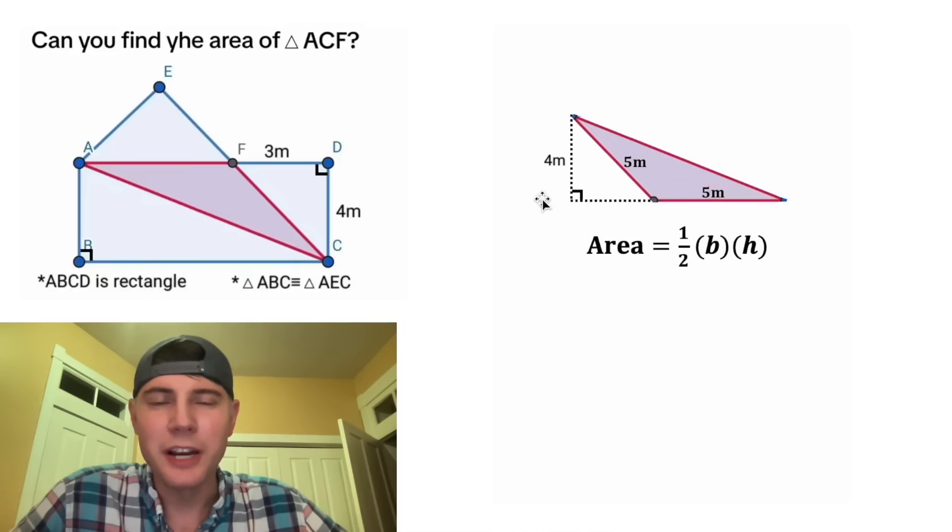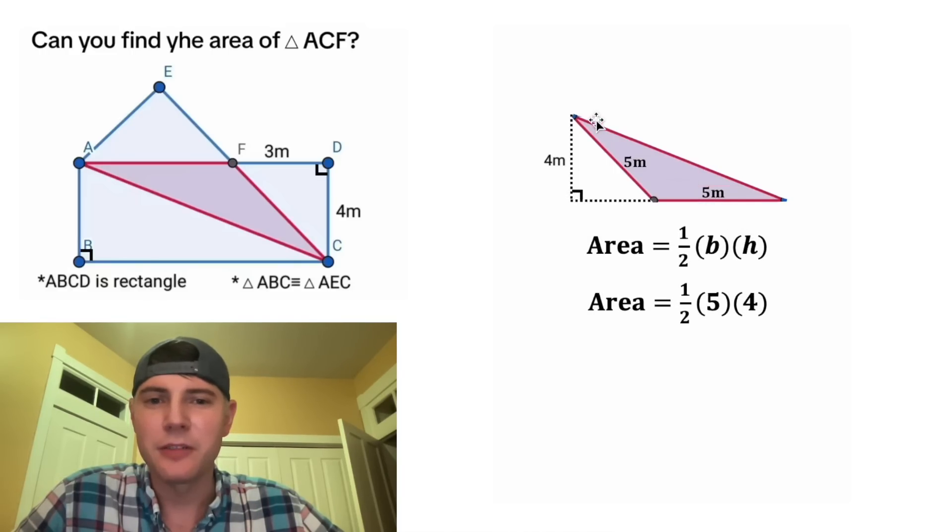The area of a triangle is equal to 1/2 × base × height. We can plug in 5 for the base and 4 for the height. And 1/2 × 5 × 4 equals 10. So the area of this red triangle is 10 meters squared.